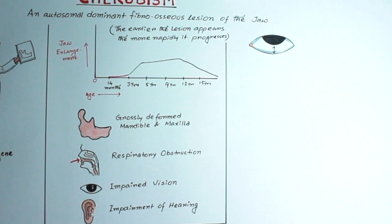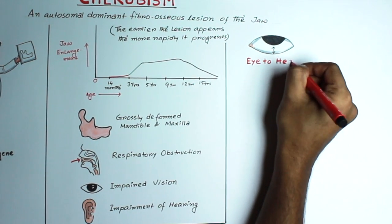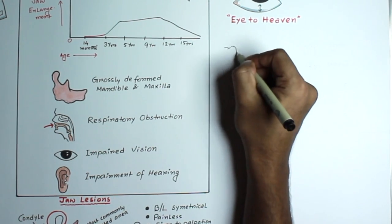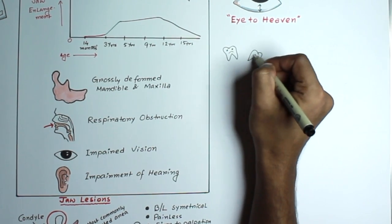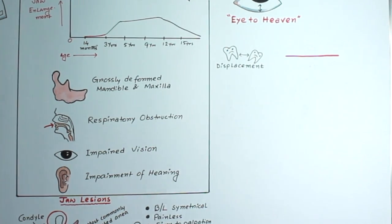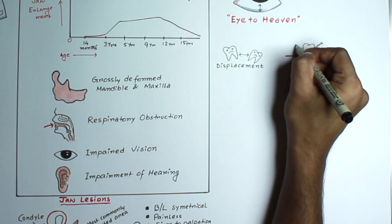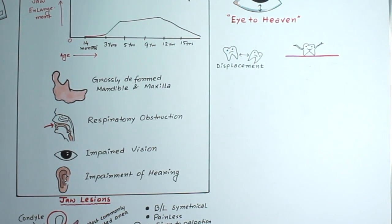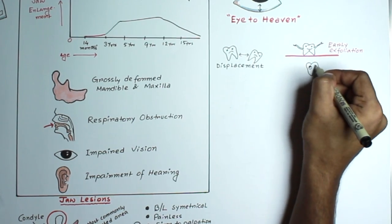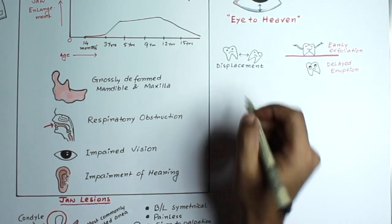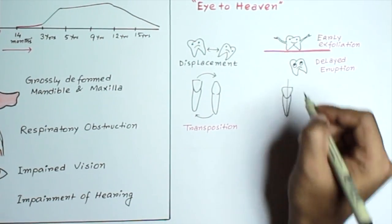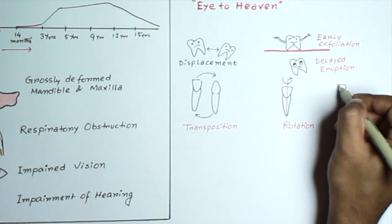Some dental abnormalities include agenesis of second and third molars of mandible, displacement of teeth, premature exfoliation of primary teeth mostly within three years of age, delayed eruption of permanent teeth, transposition, sometimes rotation, and very rarely resorption of the roots.